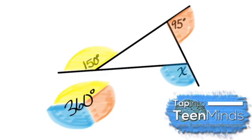So therefore, if I take away my angle of 150 degrees and 95 degrees from 360, I should be able to determine what x is.